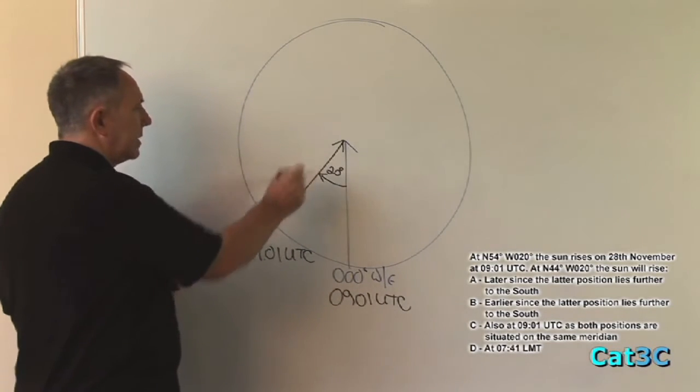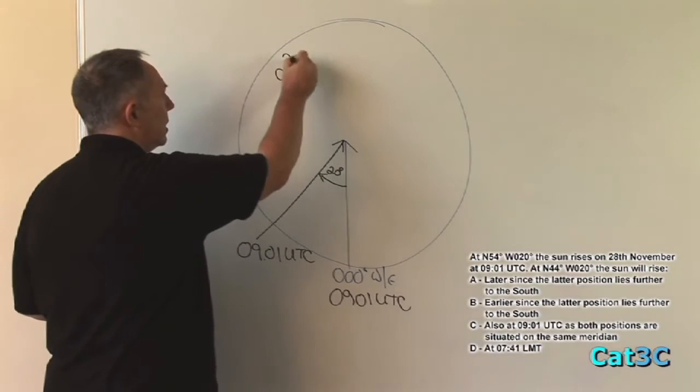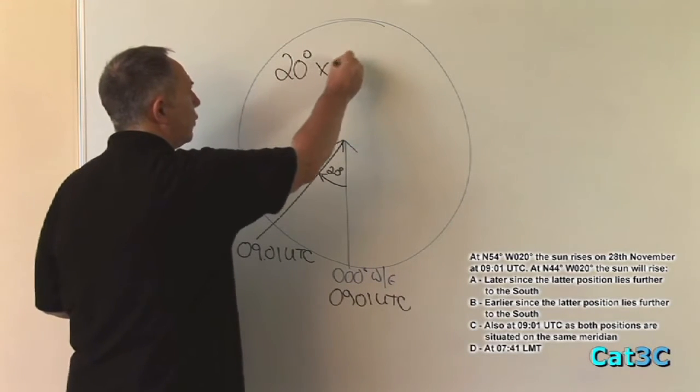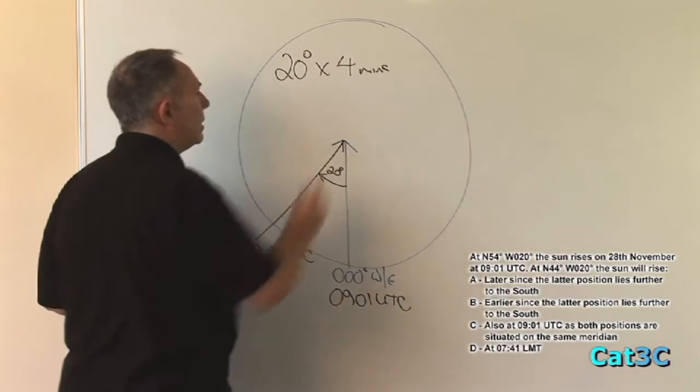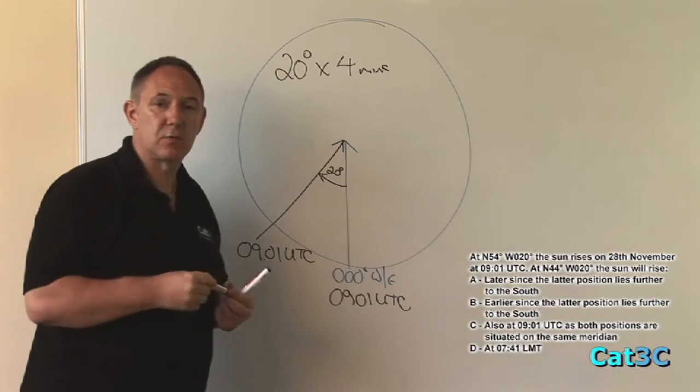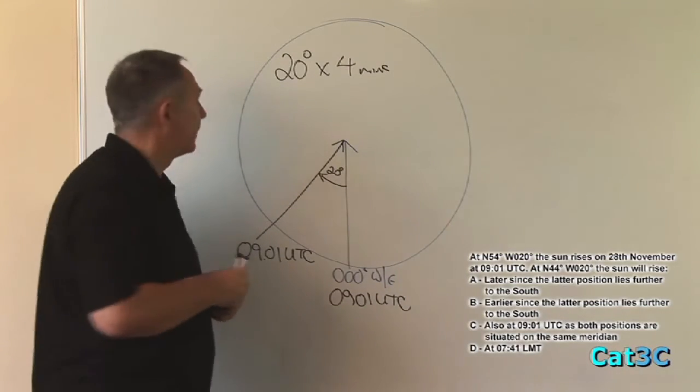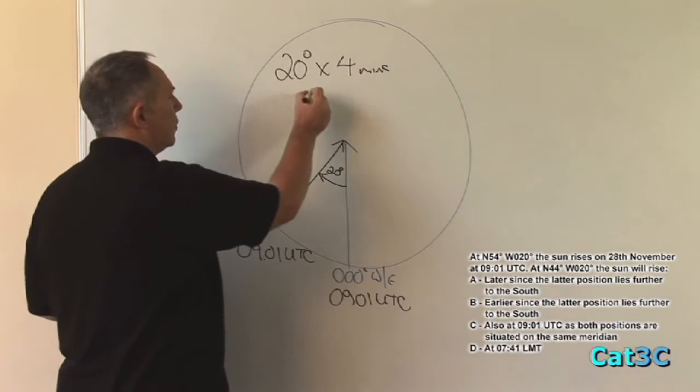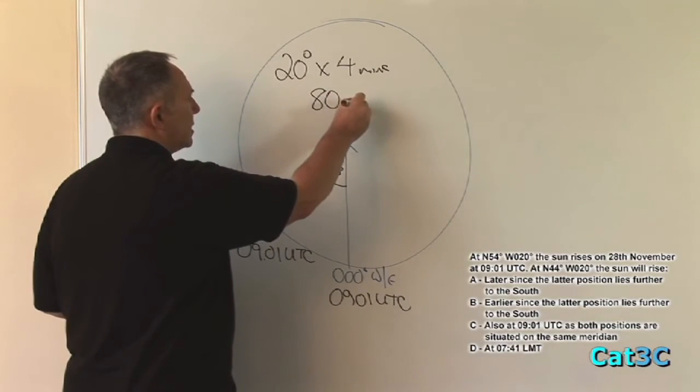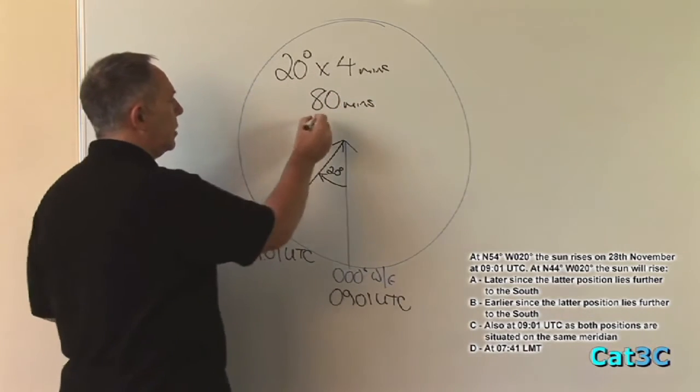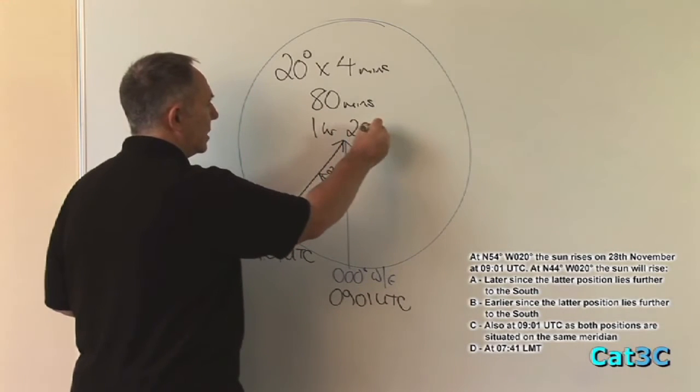To do this, I take the number of degrees and multiply it by 4 minutes. That's equal to 1 degree per 4 minutes. 20 times 4 is 80 minutes, which is equal to 1 hour and 20 minutes.